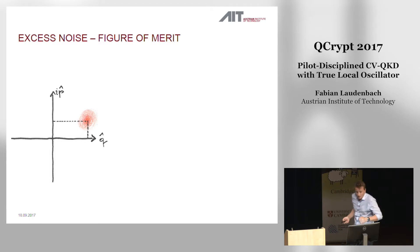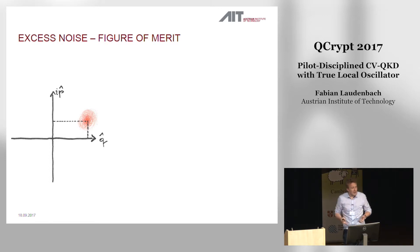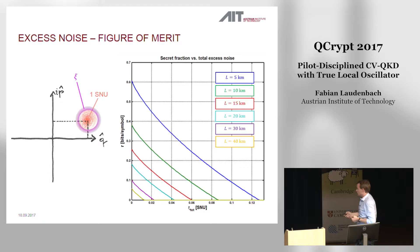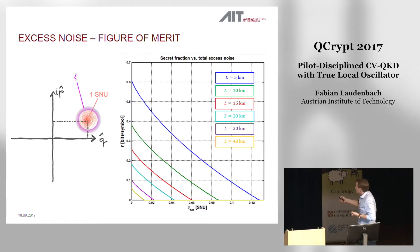Let's talk about results. Our primary figure of merit is the excess noise. A coherent state comes with a portion of intrinsic noise due to the Heisenberg relation — this is what we call one shot noise unit. The excess noise is the quadrature variance in addition to the quantum shot noise. To give an idea of how sensitive CVQKD is to excess noise: if you want a 40-kilometer channel, you can only afford a noise of roughly 0.01 shot noise units — only 1% of the quantum shot noise.